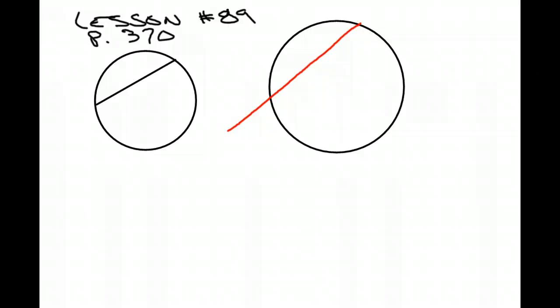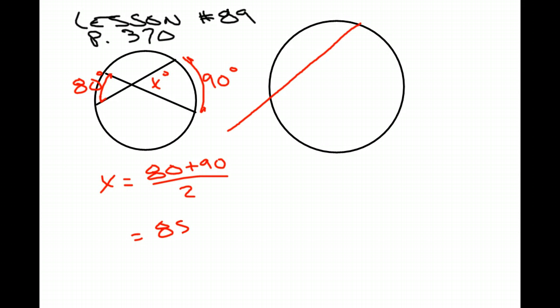One of the previous lessons we did, we had two cords crossing. And let's say for instance we wanted to know how many degrees this was, given that this was 80 and this was 90 degrees. We're talking about this distance right here. These curves are measured in degrees. So from a previous lesson, we learned that x equals the sum of these two sides, 80 plus 90, and then we divided that by 2, and so x was 85 degrees. That's how we found that.